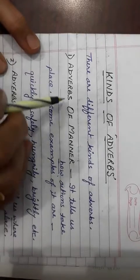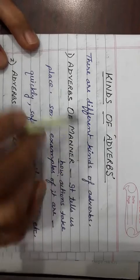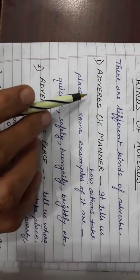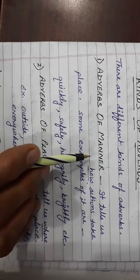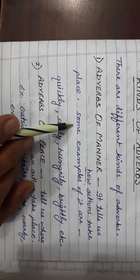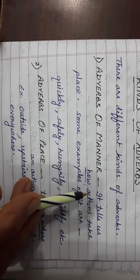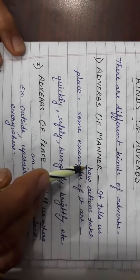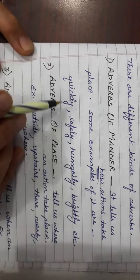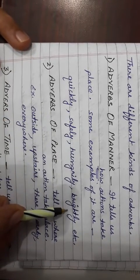Now we see kinds of adverbs. There are different kinds of adverbs. Number one, adverbs of manner. It tells us how actions take place. Some examples of it are quickly, safely, hungrily, brightly, etc.